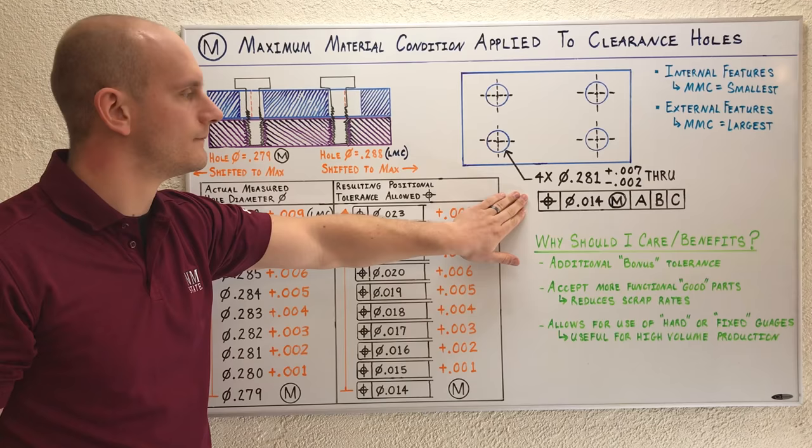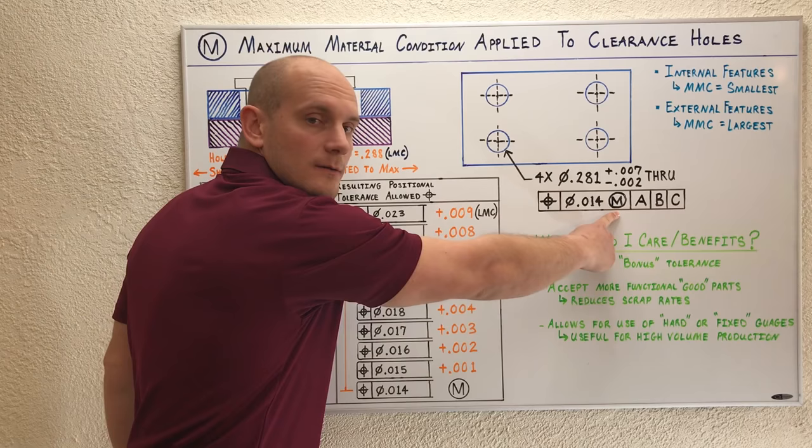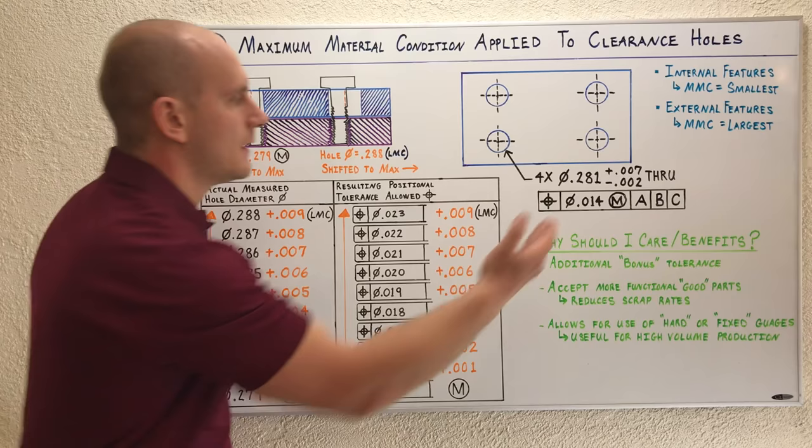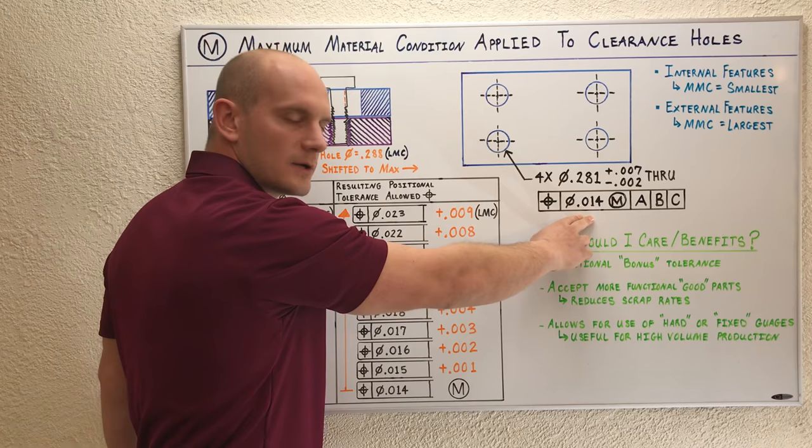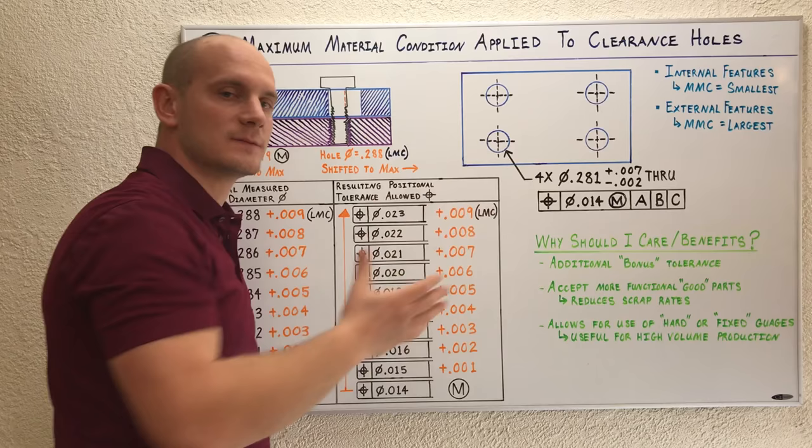What is MMC? What does it do? How and when should we use it? MMC is this symbol here, an M with a circle around it. What you're saying is that this tolerance value is only an initial value that's applicable when this clearance hole is machined to its MMC condition or maximum material condition. Any deviation away from maximum material condition, you add that deviation to this tolerance value.